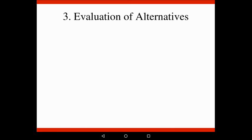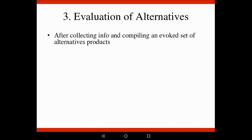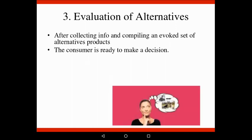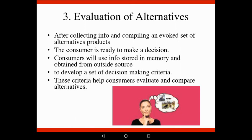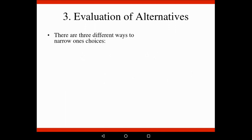Evaluation of alternatives - step three. After you've collected your information and compiled your evoked set of various alternative products you're considering, the consumer is ready to make a decision. Consumers will use information stored in memory and obtained from outside sources to develop a set of decision-making criteria. These criteria and variables will help the consumer evaluate and compare the different alternatives.